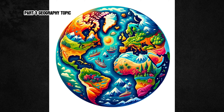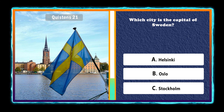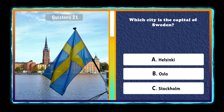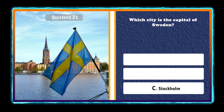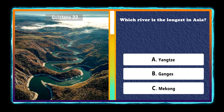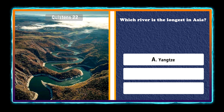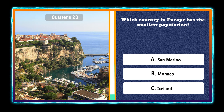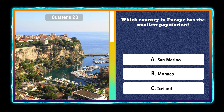Part 3, Geography topic. Which city is the capital of Sweden? Stockholm. Which river is the longest in Asia? Yangtze. Which country in Europe has the smallest population? Monaco.